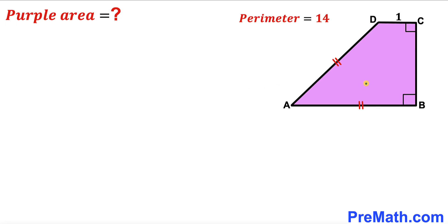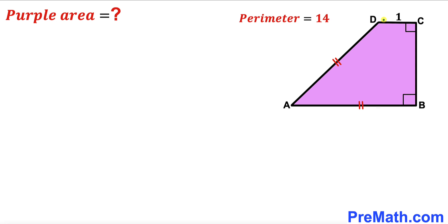Welcome to Premath. In this video we have got this purple shaded trapezoid ABCD, such that segment AD is equal to segment AB, segment CD is one unit, and the perimeter of this trapezoid has been given to us as 14 units. Our task is to calculate the area of this given trapezoid.